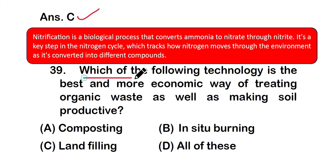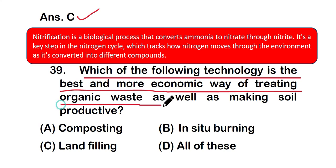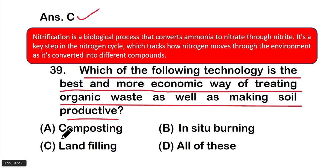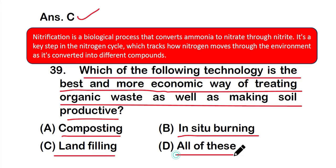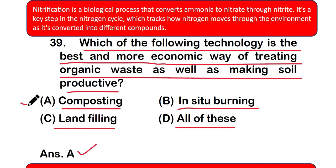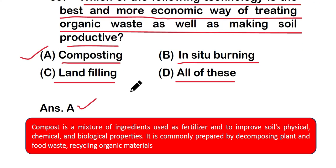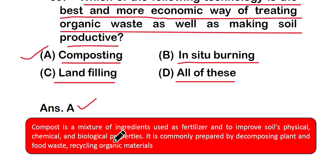Question number 39: Which of the following technologies is the best and most economic way of treating organic waste as well as making soil productive? Options: A) composting, B) in-situ burning, C) landfilling, or D) all of these. The right answer is option A — composting. Compost is a mixture of ingredients used as fertilizer to improve soil's physical, chemical, and biological properties, commonly prepared by composting plant and food waste by recycling organic materials.